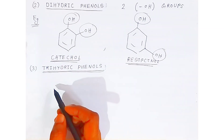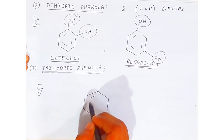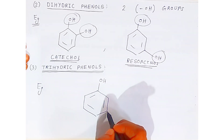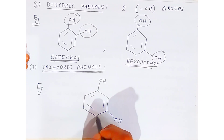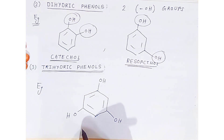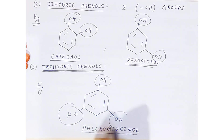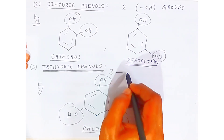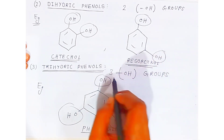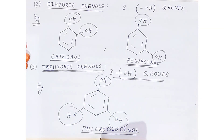Now we are going to see trihydric phenols. A very famous example: this is the aromatic benzene hydrocarbon. We are replacing one hydrogen with hydroxyl, then skipping one and replacing another hydrogen with hydroxyl, and again alternating — so there are alternate hydroxyl groups. This compound we call as phloroglucinol. Phloroglucinol belongs to trihydric phenols because it contains three hydroxyl groups. If a phenol contains three hydroxyl groups, it is called as trihydric phenol.